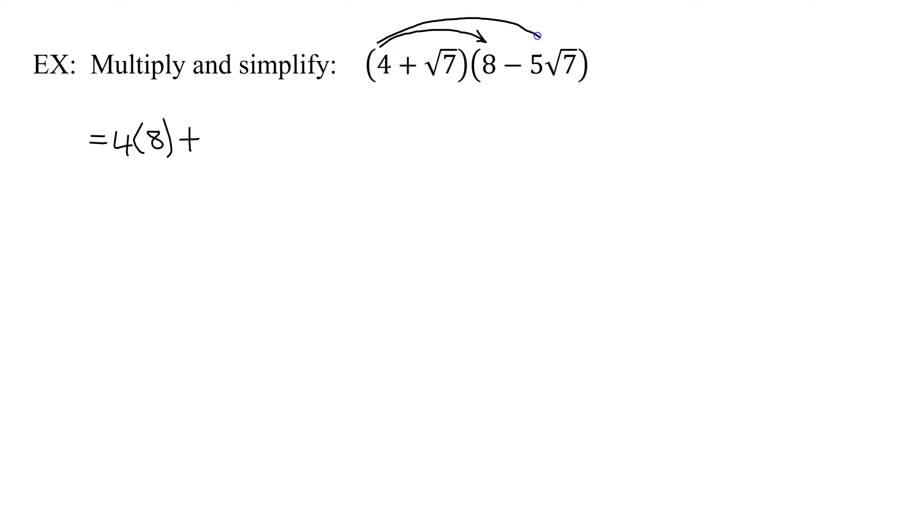So outer, O stands for outer. So I'm going to have plus 4 times negative 5 times the square root of 7, plus my inner term, which is the square root of 7 times 8, plus my last terms multiplied together, which is the square root of 7 times negative 5 the square root of 7.